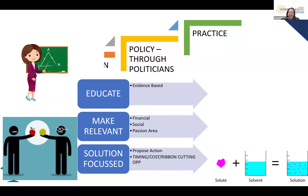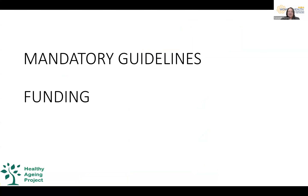Cost and ribbon-cutting opportunities matter too — that goes along with timing. We have to outline clearly: you get this and add this and that will fix it. When trying to get the attention of someone very busy with many things to do, being clear about a solution and how it aligns with what they need to achieve is the best way forward. Through politicians, we can get mandatory guidelines and enormous amounts of funding — things that shift much faster than guidelines sitting on a shelf unused.